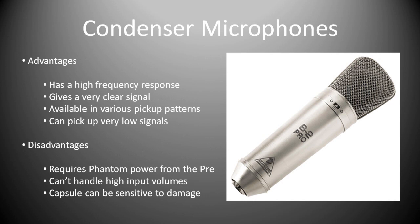The advantages of a condenser microphone are they have a high frequency response and can give a very clear signal, which is why they're very common in studio use. They're available in various pickup patterns — the B2 Pro has cardioid, figure-8, and omni, so you can choose which pattern you want to record with. They can also pick up very low signals, making them a lot more sensitive than a dynamic microphone.